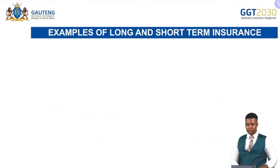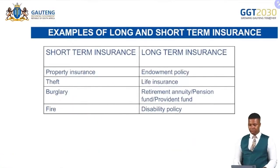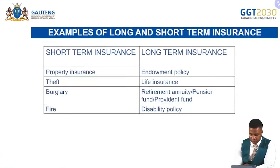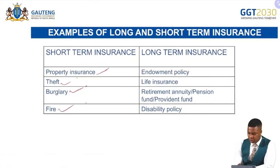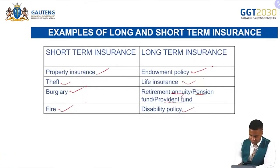Insurance is applicable to short-term insurance — examples include money in transit, theft, burglary, and fire. Assurance is applicable to long-term insurance — examples include life insurance, endowment policies, and retirement annuities, all of which allow one to receive an agreed-upon sum of money on a future date. Short-term insurance examples: property insurance, theft, burglary, fire. Long-term insurance examples: endowment policy, life insurance, retirement annuities, pension fund, provident fund, and disability policies.